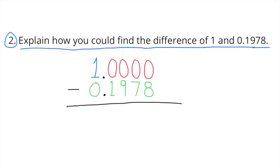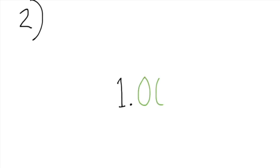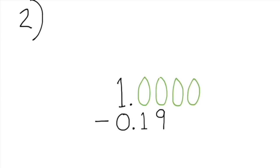Number 2: Explain how you could find the difference of 1 and 1,978 ten-thousandths. To find the difference, I'd write it as a subtraction problem: 1 minus 1,978 ten-thousandths.